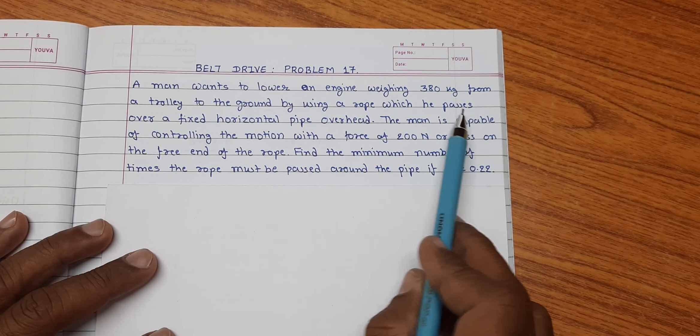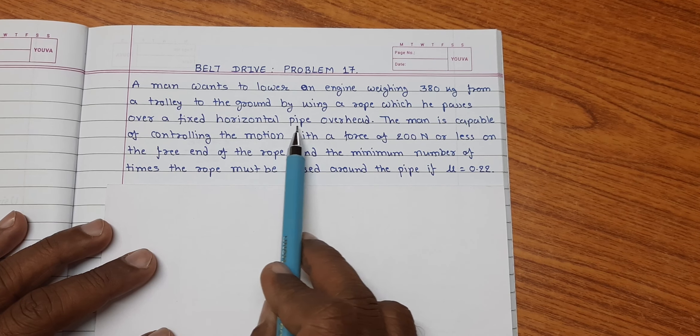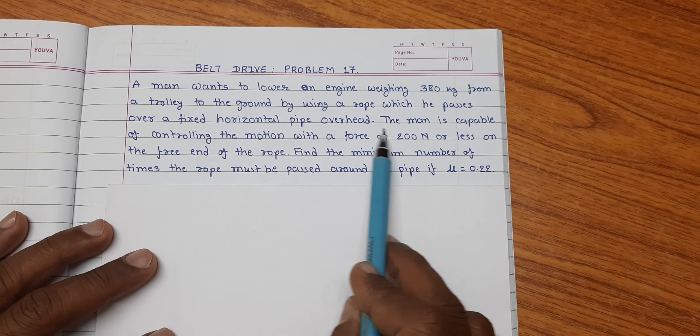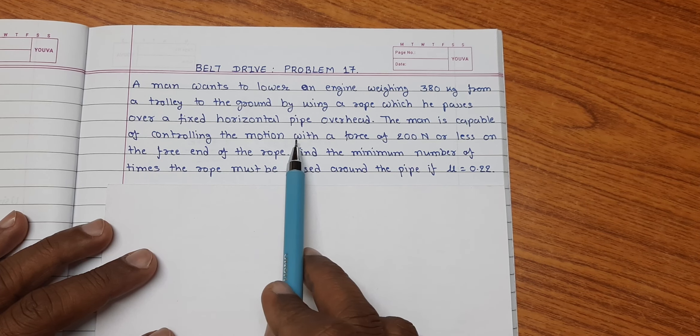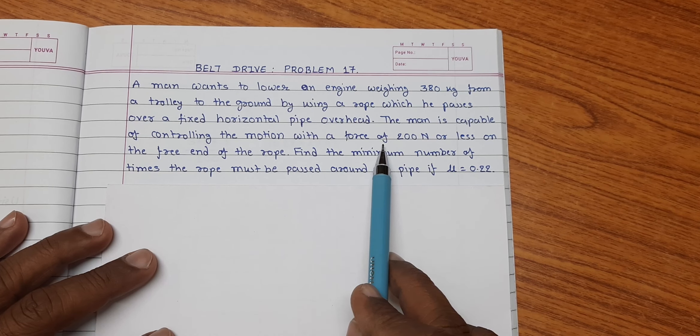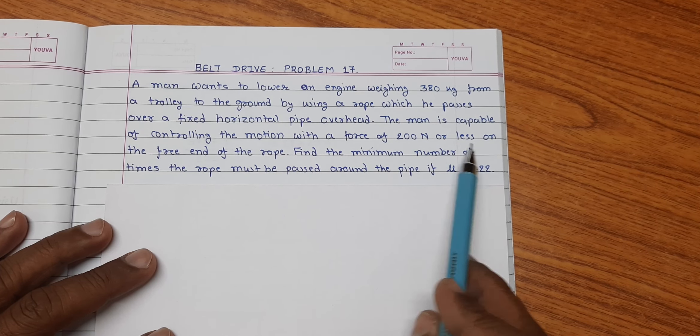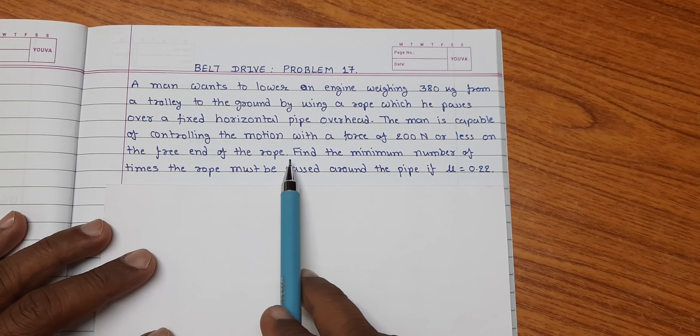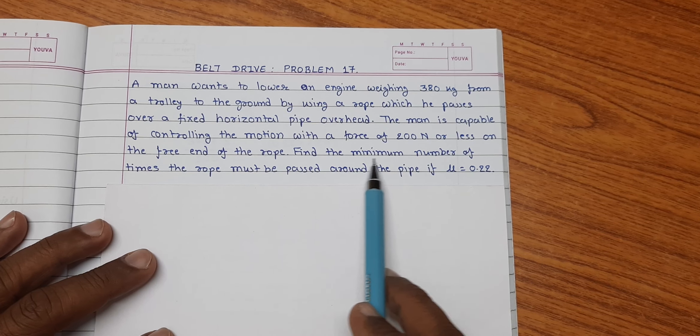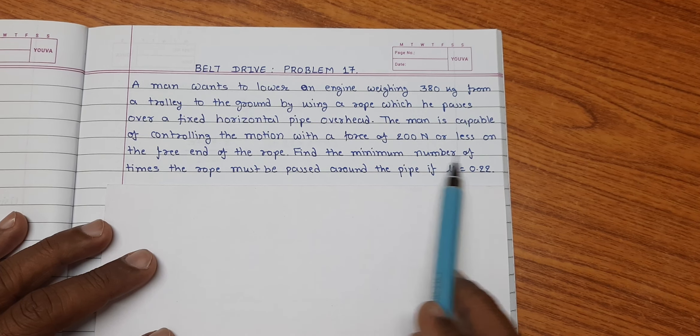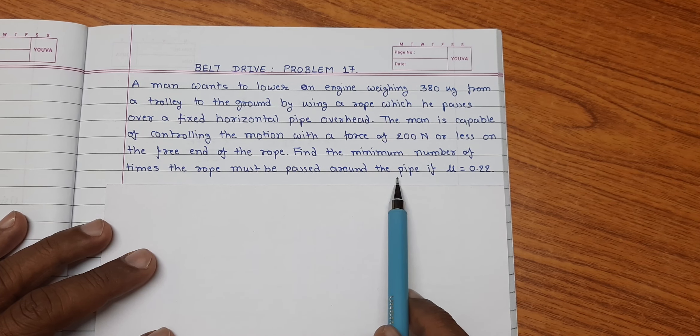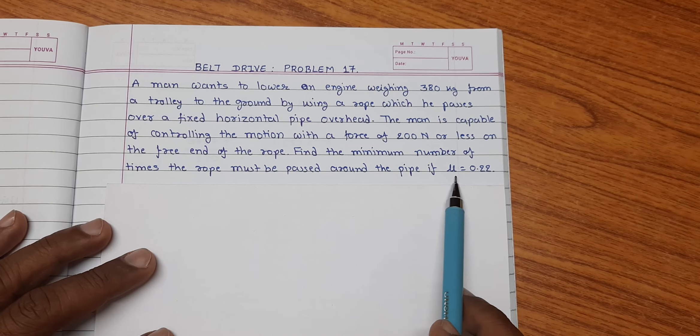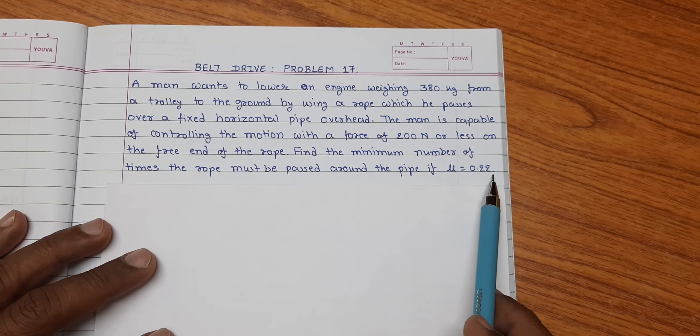He passes the rope over a fixed horizontal pipe overhead. The man is capable of controlling the motion with a force of 200 N or less on the free end of the rope. Find the minimum number of times the rope must be passed around the pipe if mu is equal to 0.22.